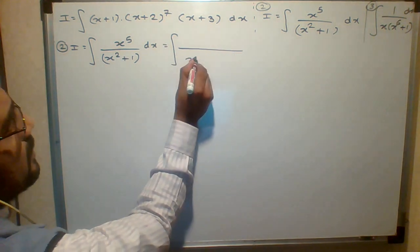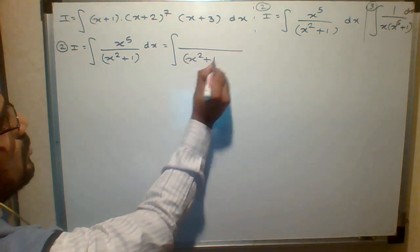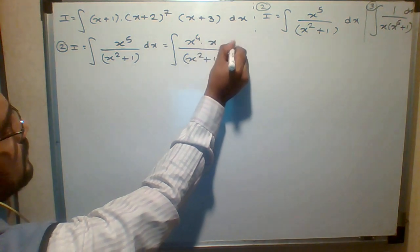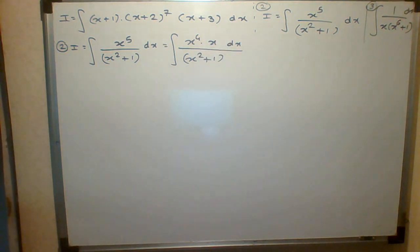We observe that x squared plus 1 is in the denominator and this x raised to 5 I can write as x raised to 4 into x. Now your question is: why have we done like this? Because this x raised to 4 can be written as x squared the whole square.